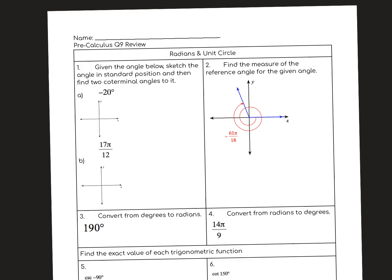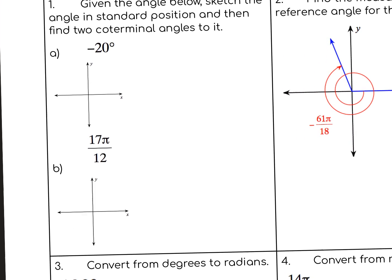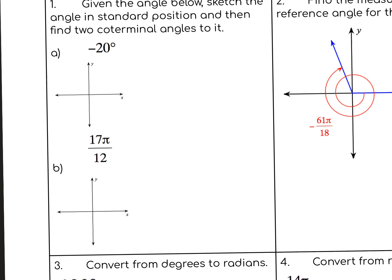Alright friends, let's make this a review. Given the angle in standard position — given the angle below, sketch it in standard position. Okay, negative 20°, it's not like somewhere down here going that way. Two co-terminal angles: if I add 360, that's 340 degrees.